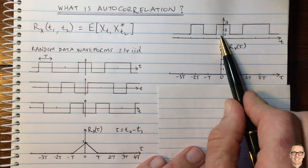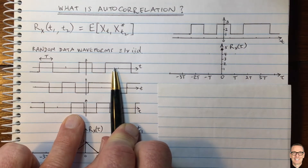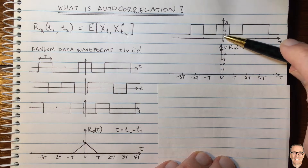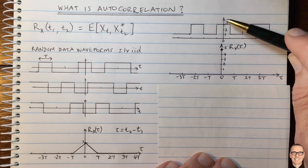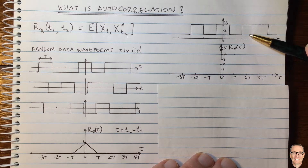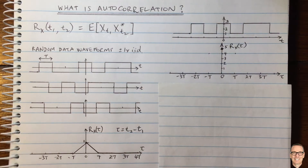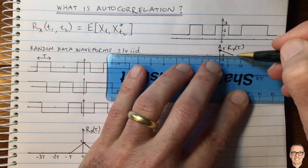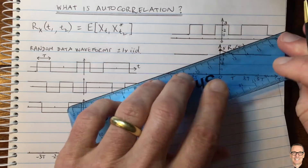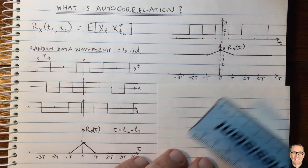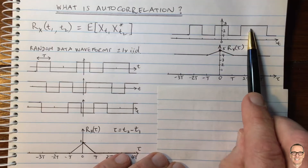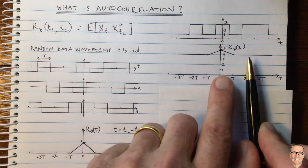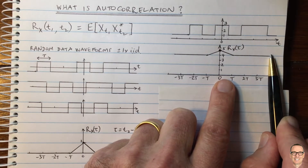Now what about a large time difference? In this case we can get three times three, one times one, one times three, or three times one. The average of those is four. So the autocorrelation function has a similar shape to the previous one, but instead of going to zero at large tau, it now settles at four. This is counterintuitive — the data is still independent, yet we don't have zero correlation at large time differences. So what's going on?